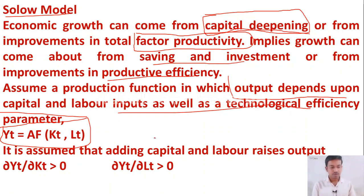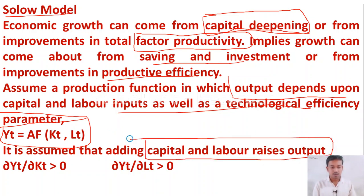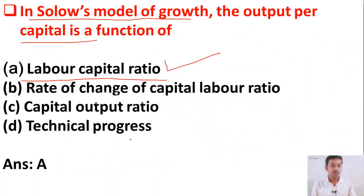In Solow's model it is assumed that capital and labor together raise output. So the right answer is option A — in Solow's model, output per capital depends on the labor and capital ratio.